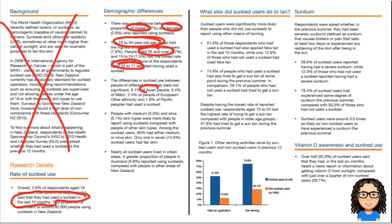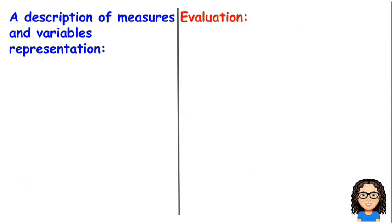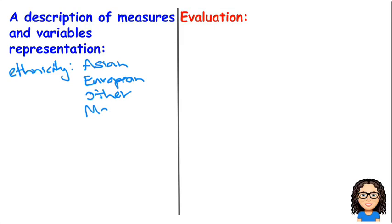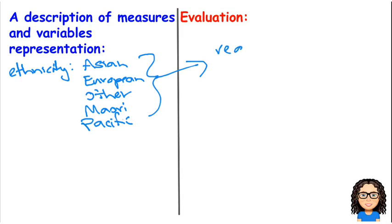What else have we got? There are things in here about different ethnicities — Asian, Māori, European, Other, and Pacific. So that's going to be another variable: ethnicity. I would expect there to be reasonable accuracy in those responses, and I could write that as an evaluation. I would expect the ethnicity data to be reasonably accurate in terms of what's been collected, and I'd want to explain why I think that would be.